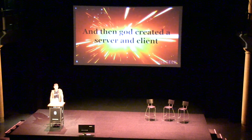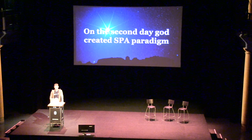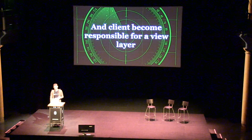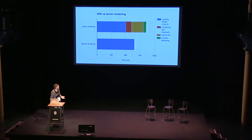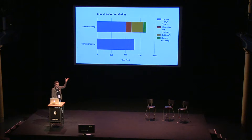In the beginning, there was nothing. Then God created a server and client and said: server is responsible for everything, and the client just displays some markup. It's a bit insulting for the client, but it was like that. So on the second day, God said let's go with the SPA paradigm. SPA means that the client is responsible for the view layer. But then people realized they were losing some time, because building a full SPA requires additional steps before presenting markup to the user — first get HTML, CSS, JavaScript, then parse and initialize the JS application and make a call to server, then render content. So SPA became way slower than server rendering — a regression.